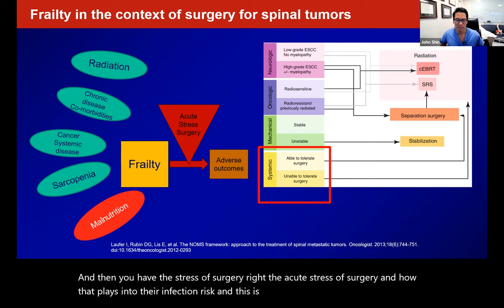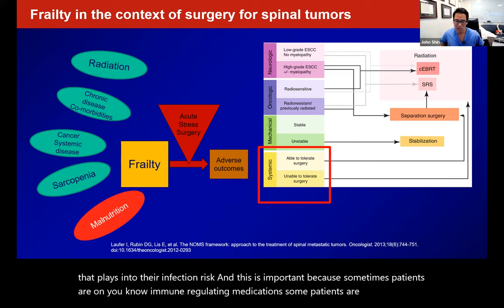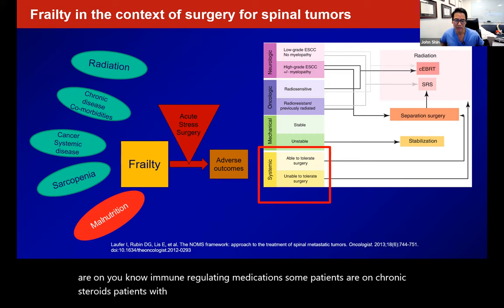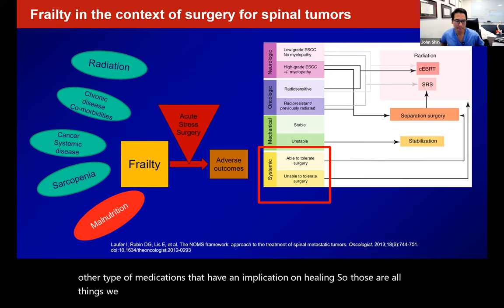Sometimes patients are on immune-regulating medications. Some are on chronic steroids — patients with bad rheumatoid arthritis may be on steroids or other medications that have an implication on healing. And then there's the concept of sarcopenia: body composition is very important. Malnutrition is another factor — we often look at patients and judge nutrition just by their BMI, but you don't really know their level of nutrition. The acute stress of surgery also plays into infection risk.